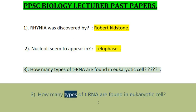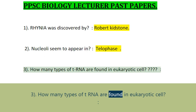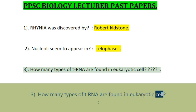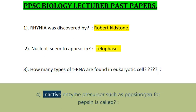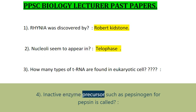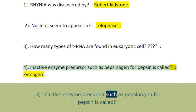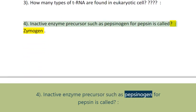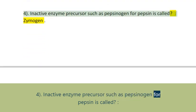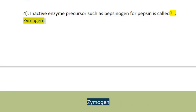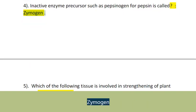Question 3: How many types of tRNA are found in eukaryotic cells? Question 4: Inactive enzyme precursor such as pepsinogen for pepsin is called Zymogen.